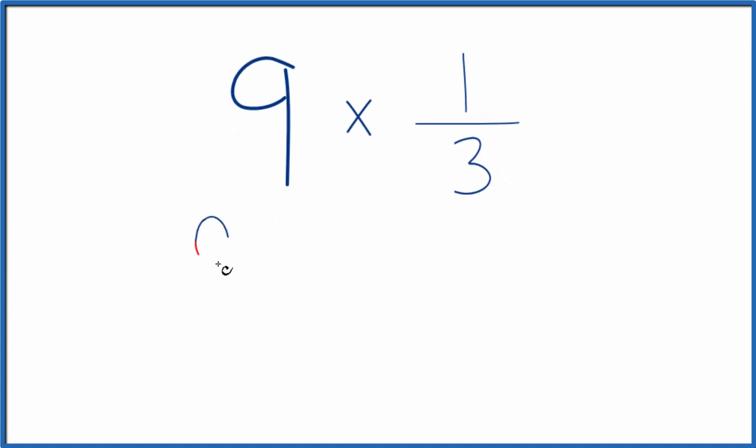It might be easier to think about 9 as 9 over 1. 9 divided by 1, that's still 9. But now we have a fraction, and we can multiply that fraction times 1 over 3.